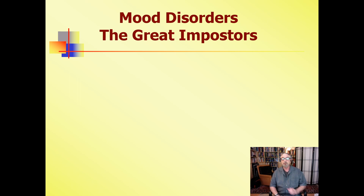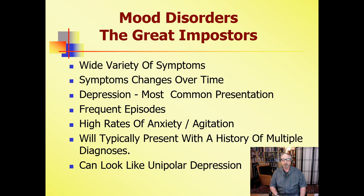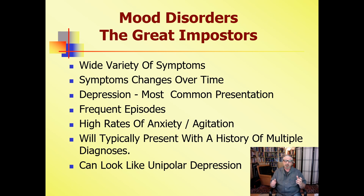Mood disorders are what I call the great imposters. They can present as a variety of different illnesses over time. Symptoms change; they have different symptoms. Depression is still the most common presentation when they come to see you. They have frequent episodes — someone who tells you they go into these depressions five or six times a year, maybe lasting a month: that's not unipolar depression. When you see people with multiple episodes over the course of a year, they have a mood disorder.